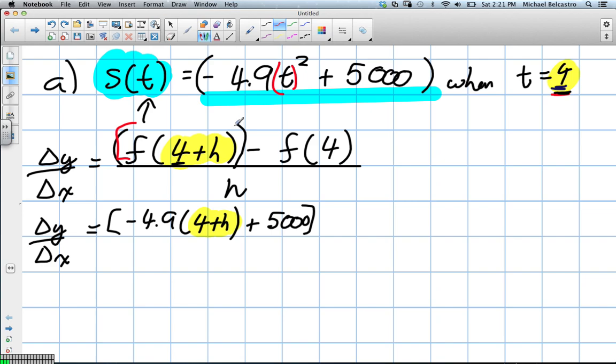So again, rate of change over x is equal to, so we're going to put the entire function in now. So for this part here, we replace this entire thing with a function: negative 4.9, and instead of putting t, we put 4 plus h. So that's what we replaced our t with, the 4 plus h, and then plus 5000. And that's what this is here. We've just replaced that entire thing with this function. And then we subtract the function when we're at 4.